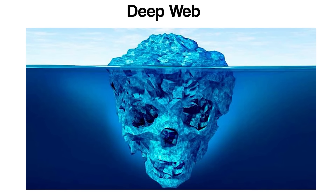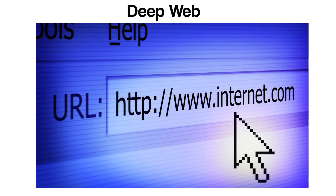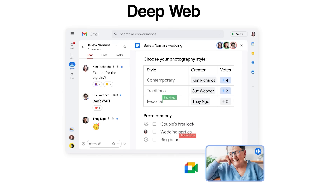The Deep Web includes anything stored in private databases, dynamic pages generated in response to specific queries, academic journals behind subscription walls, personal email accounts, online banking systems, medical records, and more. These systems often require authentication or specific URLs to access, making them invisible to standard search engines. For instance, when someone logs into their email or accesses their bank account online, they are navigating the Deep Web, not the Surface Web.